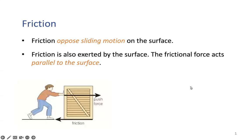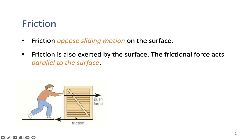Hello, everyone. In this class, we are going to discuss friction. As you guys know, we have had similar examples involving friction. Friction is always opposite to the motion that is going on or trying to happen — opposite to the direction the object is trying to move. The surface creates this resistance, the friction force, acting on the object parallel to the surface but in the opposite direction.